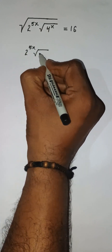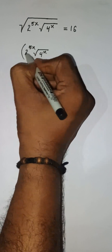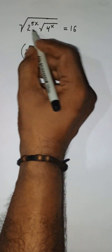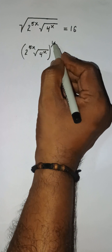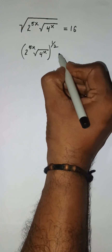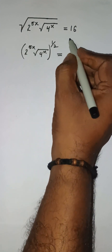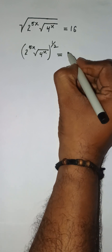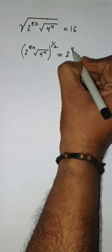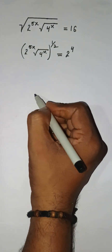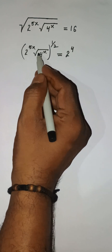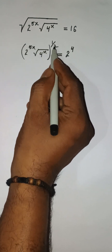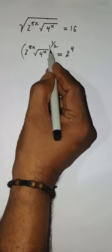We have root under 4 to the power x, with the square root converted as power 1 upon 2. Here we have 16, which can be written as 2 to the power 4.